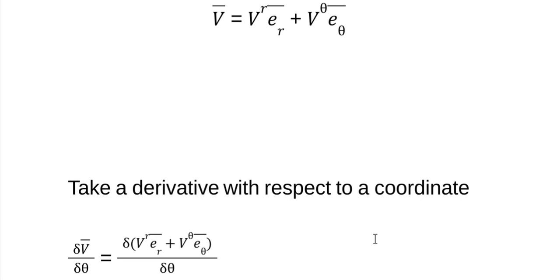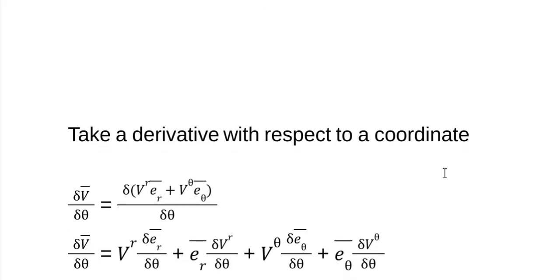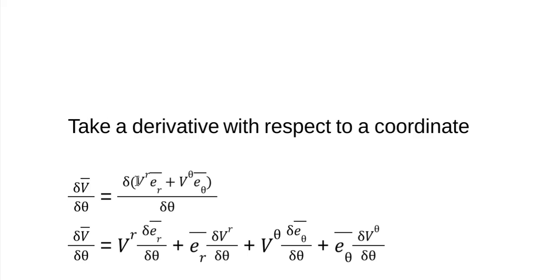Now, here's the trick. Because these basis vectors are not constants, they're not constant in the space, they change in the space, you can't just write these down as you do in Cartesian coordinates. You have to use the product rule. So we have the first times derivative of the second plus the second times derivative of the first. In that case, we get four terms.